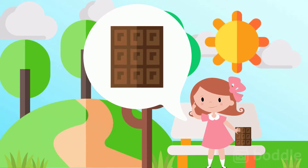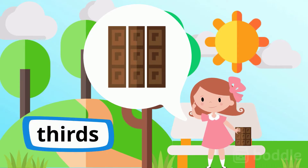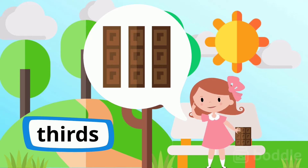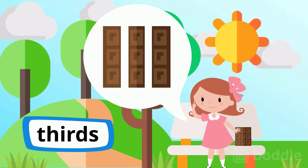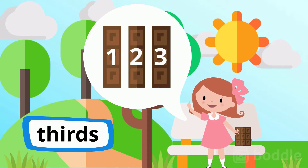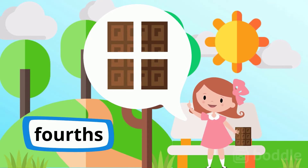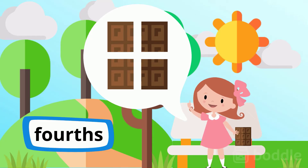But what if she wants to divide it into thirds? Then how many pieces will she have? Three is correct. Good job. What about fourths though? How many pieces would she have then? She would have four pieces.